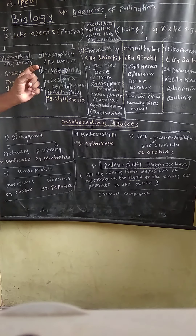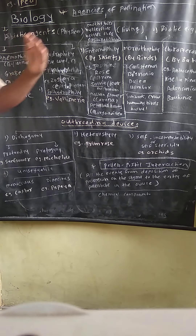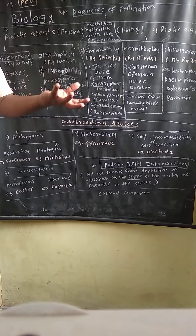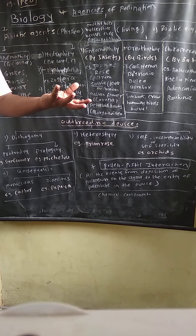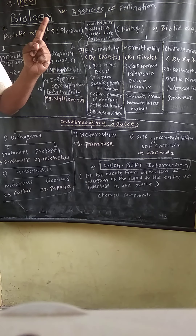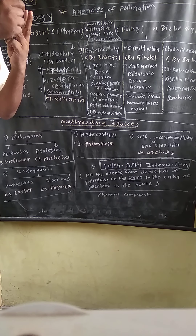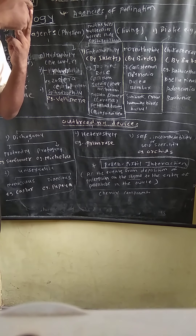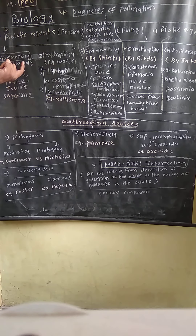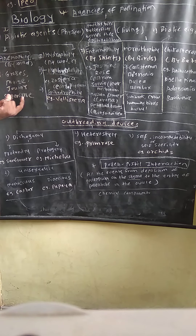Anemophily is the scientific word — 'anemo' means wind. These flowers are colorless, inconspicuous, very small, without nectar, without bright color, and without fragrance. The pollen grains are produced in large numbers, and anthers are versatile. Pollen grains are light and the stigma is feathery. Examples include grasses and sugarcane.